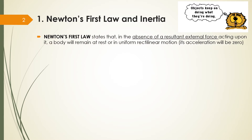The first law states that in the absence of a resultant external force acting upon a body, a body will remain at rest or in uniform rectilinear motion. It means it will not have acceleration, so acceleration will be zero.